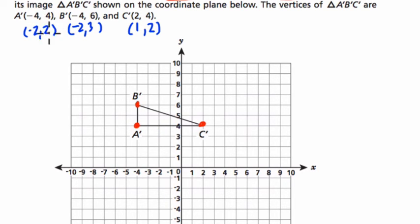When I cut the first point in half, it should be negative 2, 2. Sorry about that. Negative 2, 2. Negative 2, 3. And of course 1, 2 here.